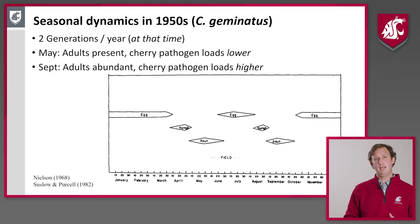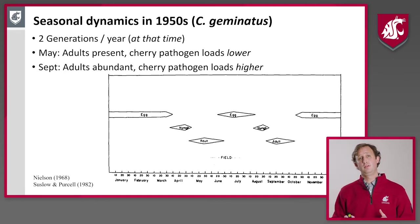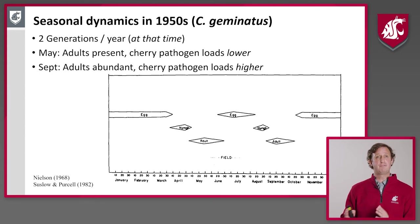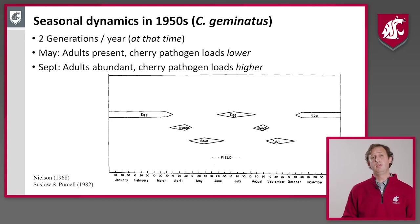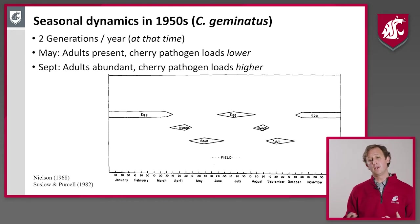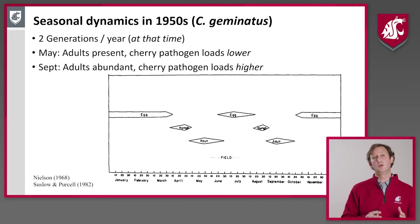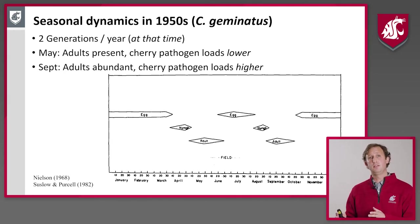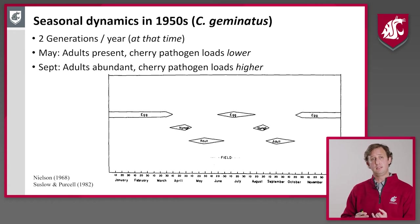One key finding from our investigation is that leafhoppers are abundant after harvest, and that can be a really important time for management. Research from the 1950s by Mervyn Nielsen developed the phenology for these leafhoppers and found they first appear in May and then again in the August–September period. Studies in California found that leafhoppers are more likely to acquire phytoplasma later in the season, and Scott Harper's group found that phytoplasma titers in plants are actually higher later in the season too. This highlights the importance of August and September, when phytoplasma concentrations are high and leafhoppers are abundant.